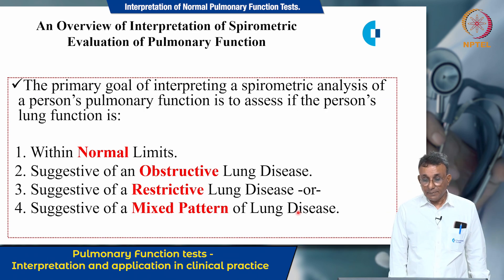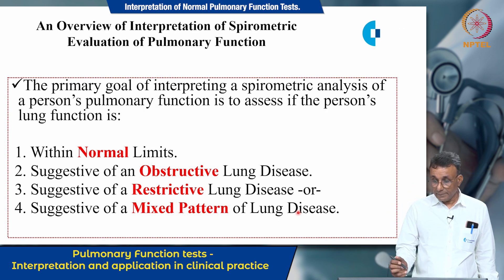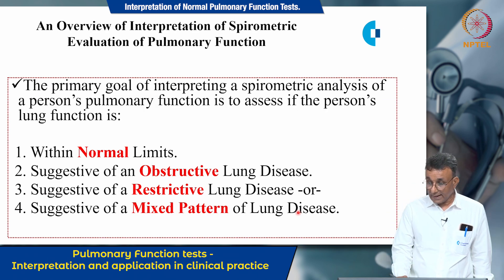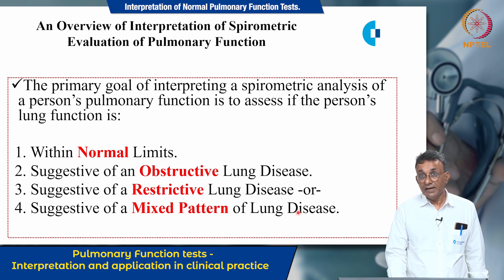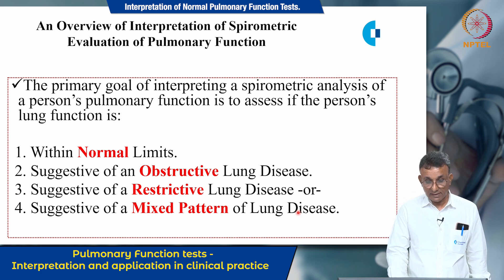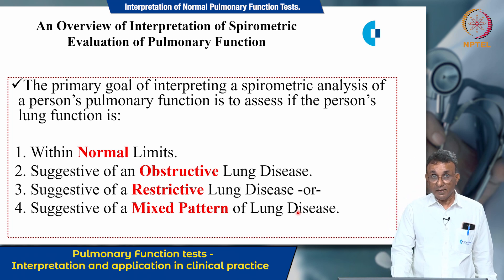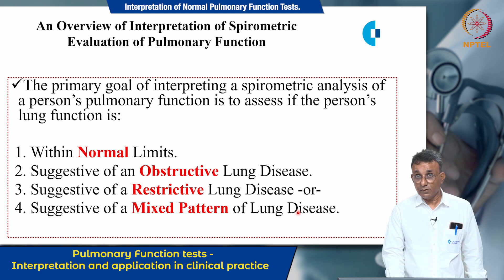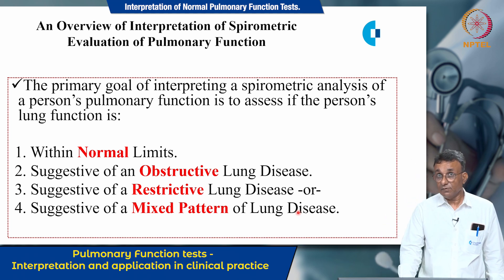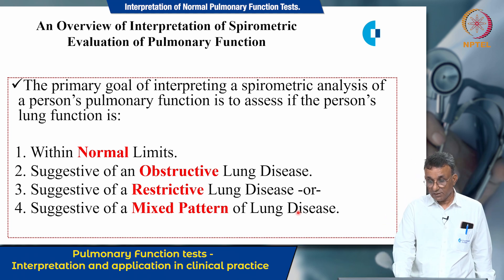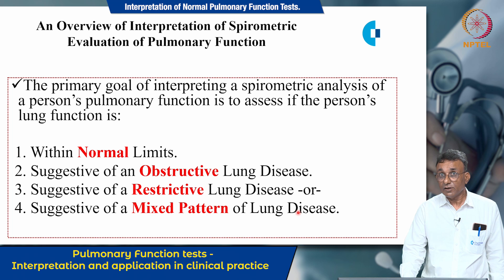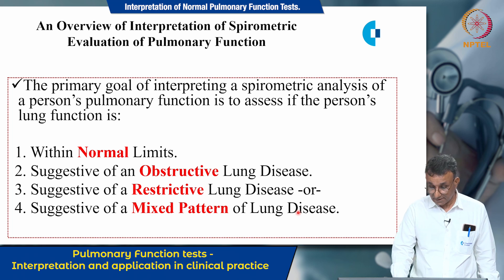This slide shows that the primary goal in interpreting a spirometric analysis of a person's pulmonary function is to assess if the person's lung function is within normal limits, suggestive of an obstructive lung disease, suggestive of a restrictive lung disease, or suggestive of a mixed pattern of lung disease.